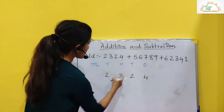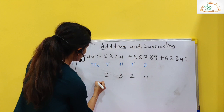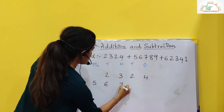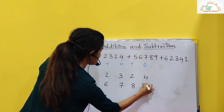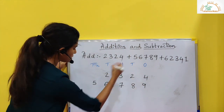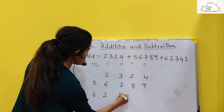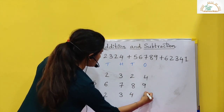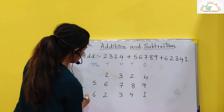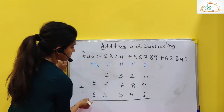Next is 5, 6, 7, 8, 9. So 5 will come here, 6, 7, 8, 9. And the next number is 6, 2, 3, 4, 1. Put the addition sign, plus sign, and add the numbers.